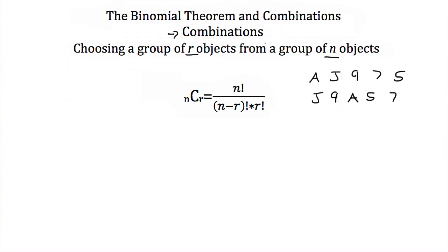Combinations, if you've studied permutations, are just like permutations except the order doesn't matter. Now if we wanted to calculate how many different combinations of r objects out of n objects, we could use this formula: n choose r is equal to n factorial divided by n minus r factorial times r factorial.